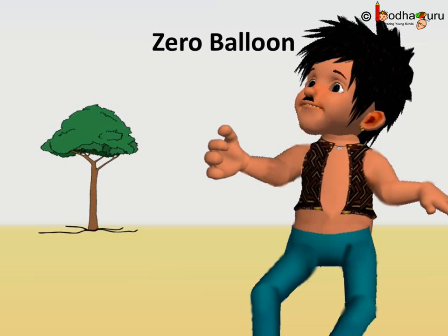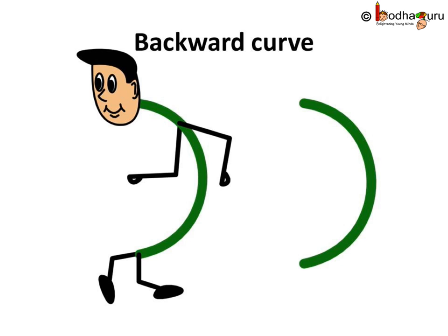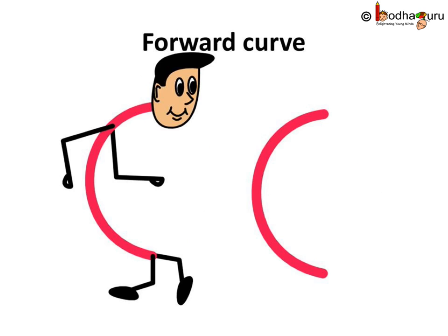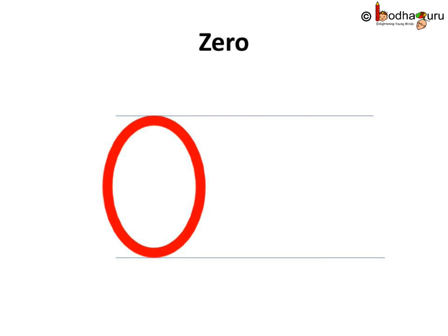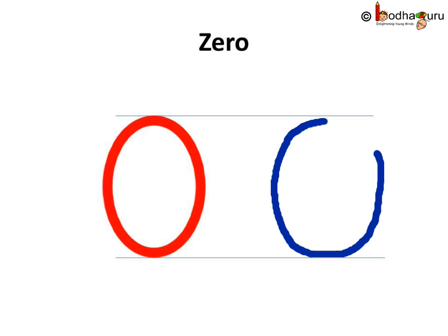How do we write zero? Remember, the backward curve — the curve looking back — and the forward curve — the one looking in the forward direction. Let us use both of them to write zero. We will write number zero. First, draw a curve facing down, and then a curve facing up. Look, this is zero.